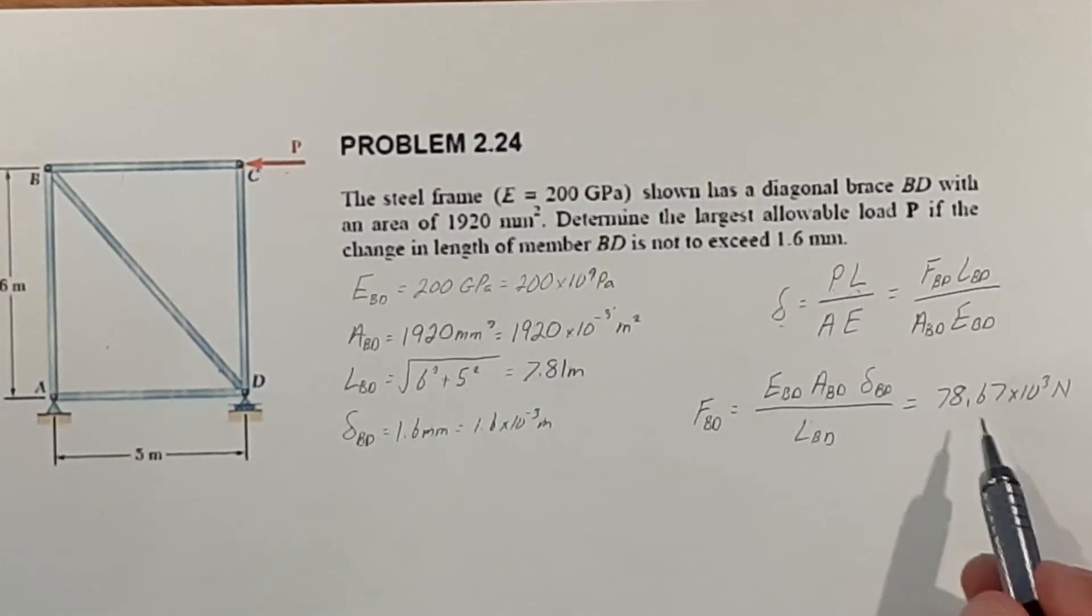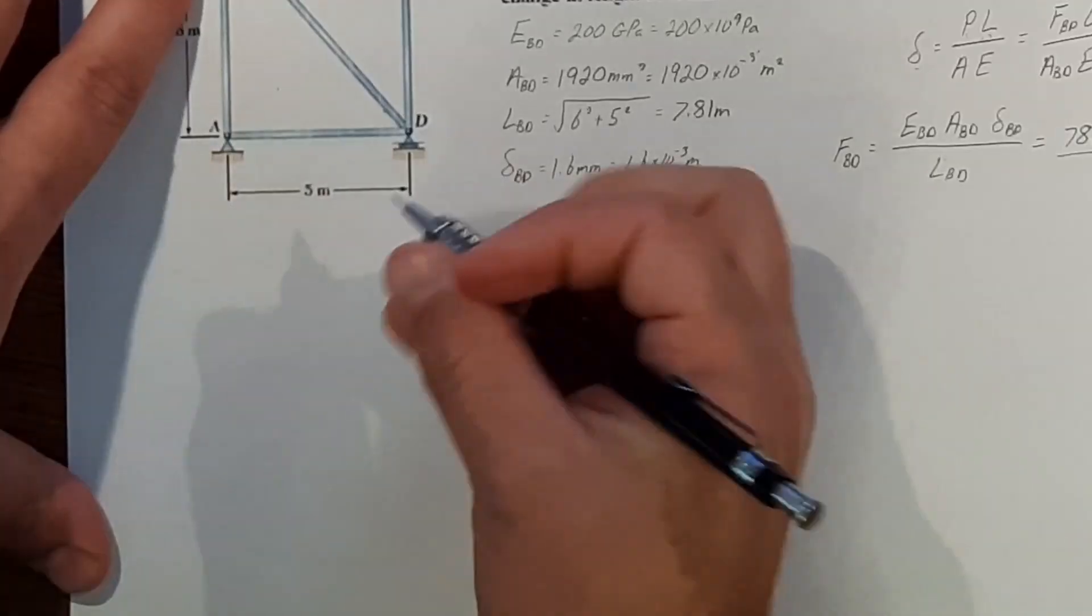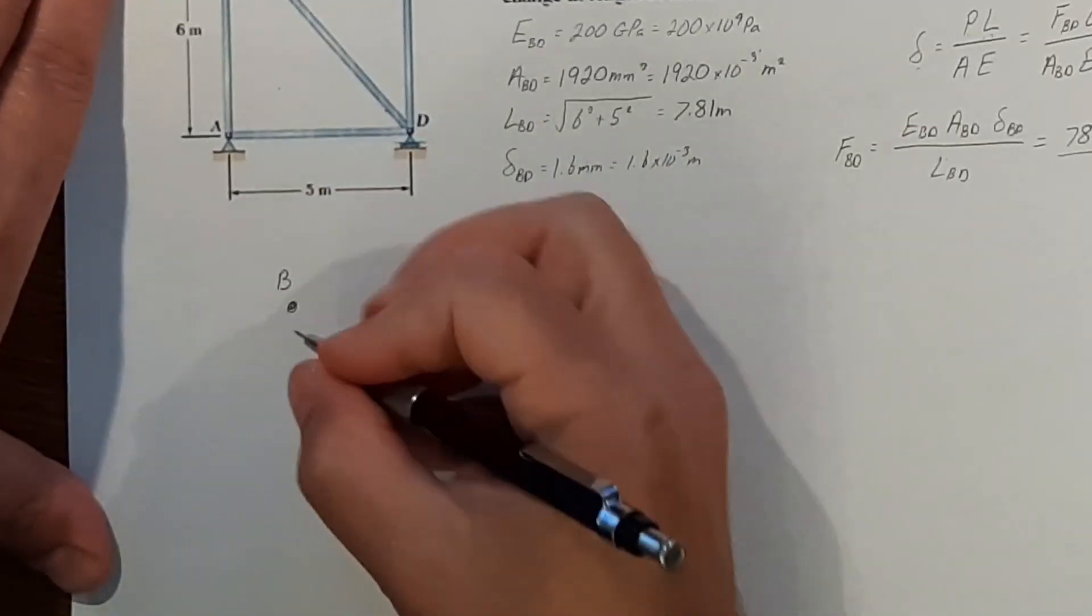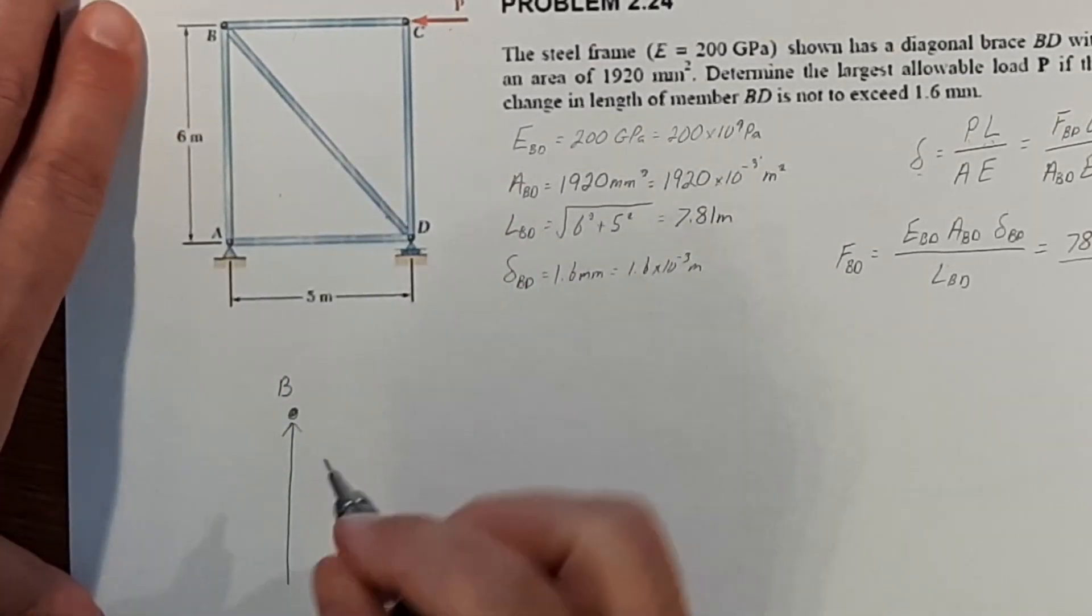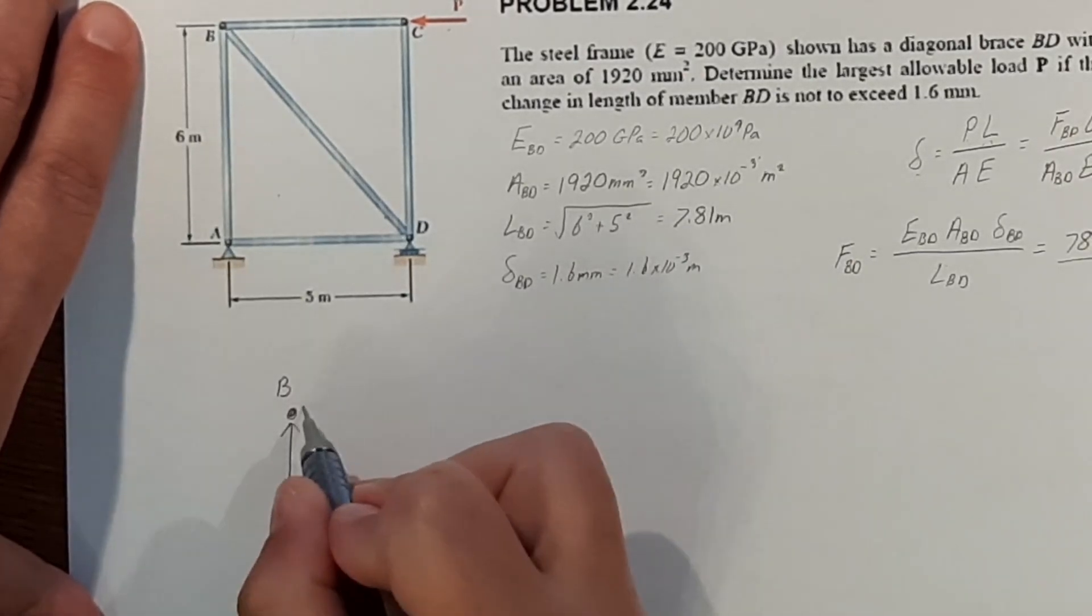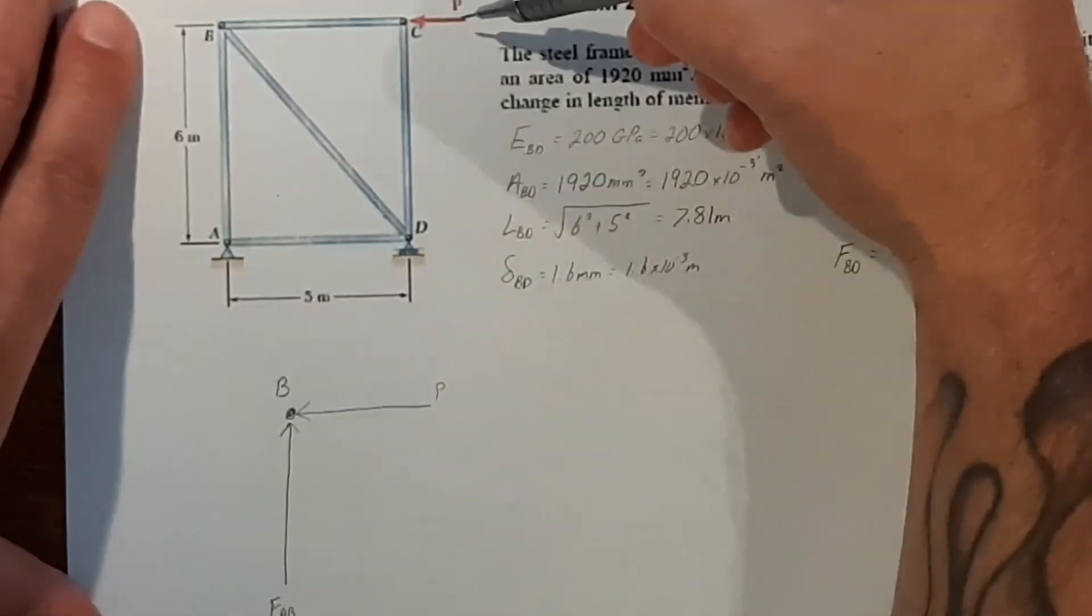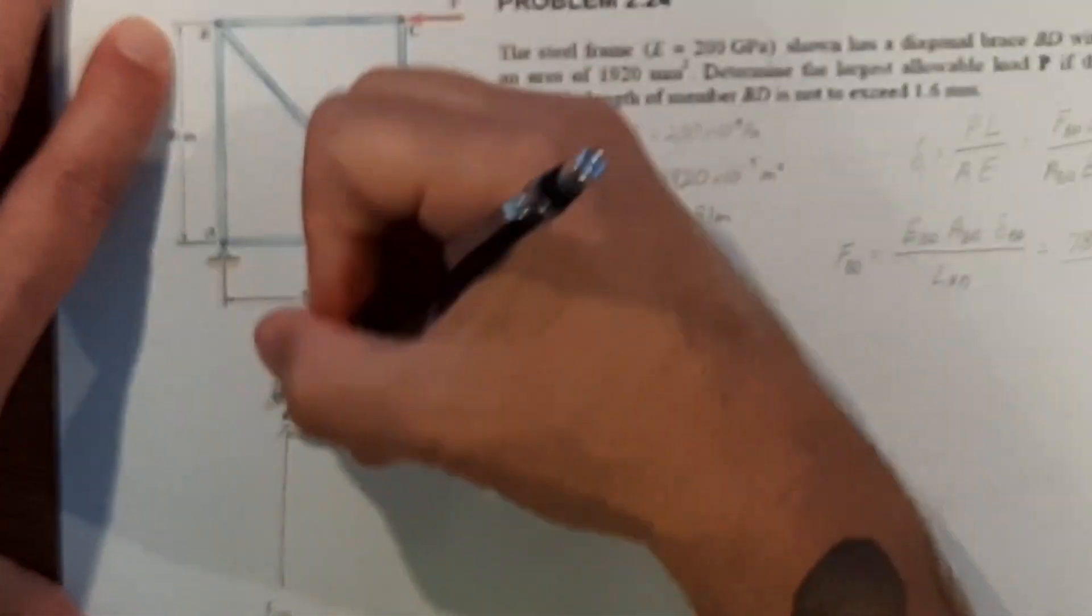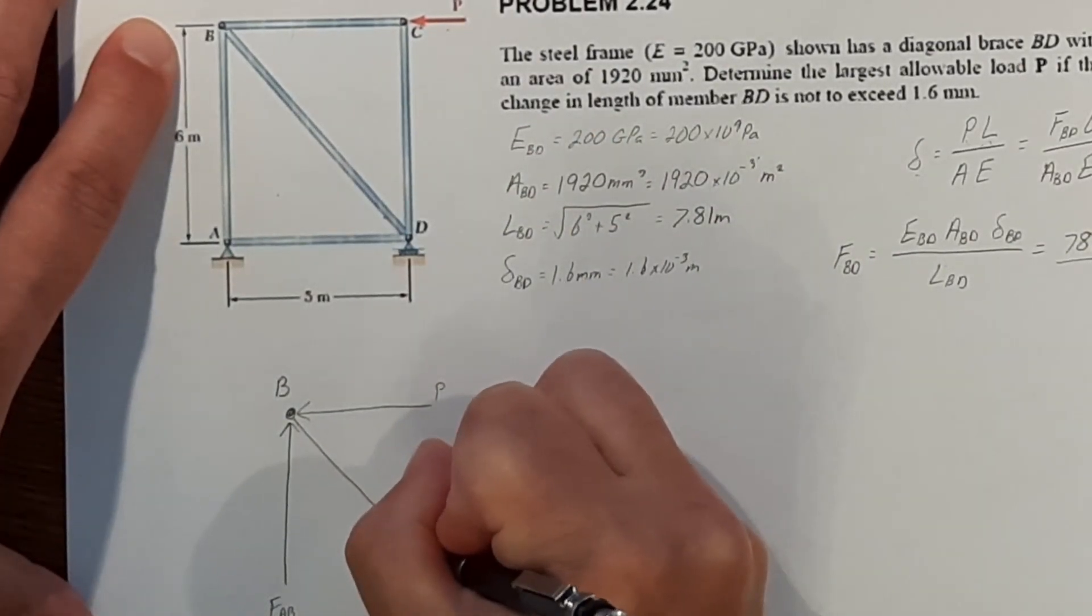So now that we have our force in BD, now we can go back and analyze our truss structure. If we're looking at point B here, we know that we have some force acting through A going to B of F_AB. We know also that we have some force P. We don't know what it is, but we know there's a force here because that's the one we're trying to find. And then the one we just calculated is also here, and that is F of BD.